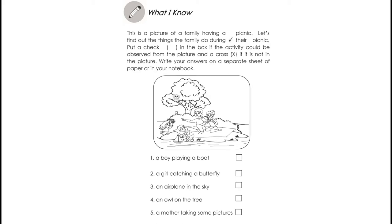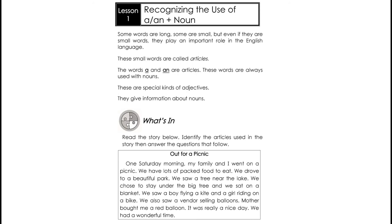Some words are long, some are small. But even though they are small words, they play an important role in the English language. These small words are called articles. The words A and An are articles. These words are always used with nouns. These are special kinds of adjectives. They give information about nouns.